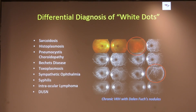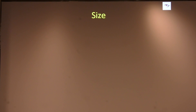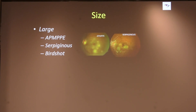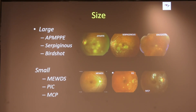The differential diagnosis includes sarcoidosis, histoplasmosis, pneumocystitis, choroidopathies, Behcet's, toxoplasmosis, sympathetic ophthalmia, intraocular lymphomas — which is one of the main things we look at right now — and DUSN. It's important to differentiate dots from spots based on size. The large ones are typically placoids, serpiginous, and bird shots. The small ones are usually MEWDS, punctate inner choroidopathy, and multifocal choroiditis with pan-uveitis.